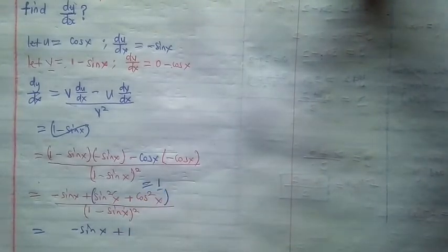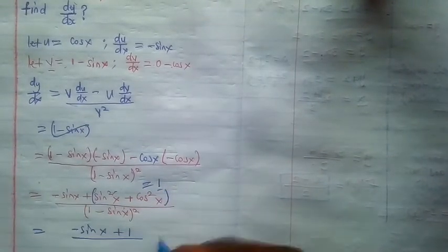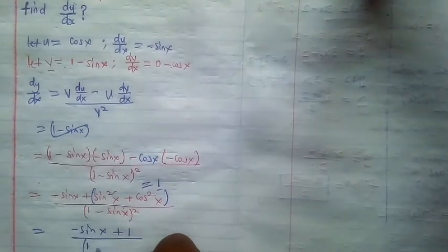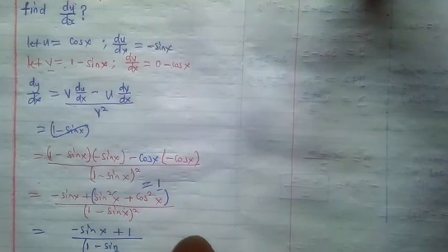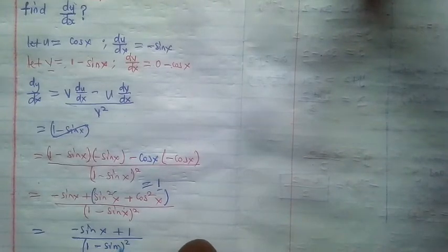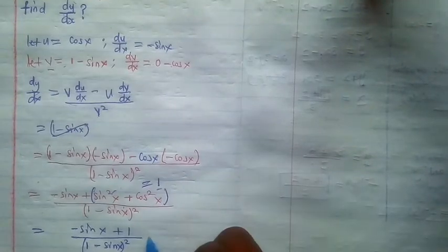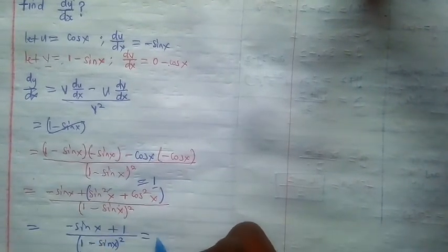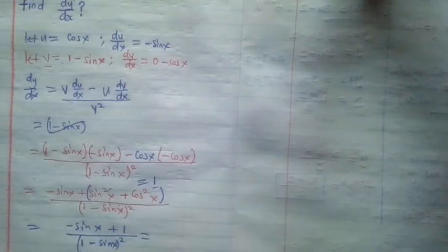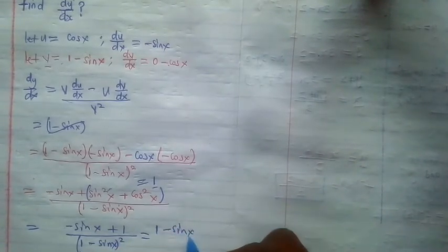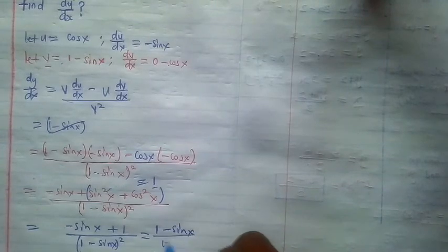So this would mean negative sine x plus 1. The whole of this is equal to 1 from the basic trig identities. This is divided by 1 minus sine x squared.